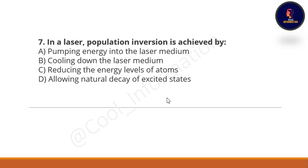Next question: In a laser, population inversion is achieved by what? Option A: pumping energy into the laser medium. Option B: cooling down the laser medium. Option C: reducing the energy level of atoms. Option D: allowing natural decay of excited state. The correct option is A, which is pumping energy into the laser medium.